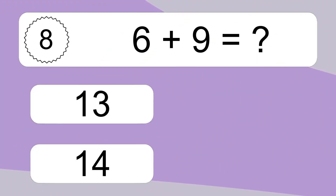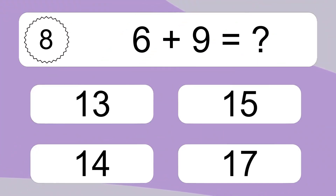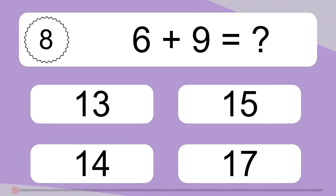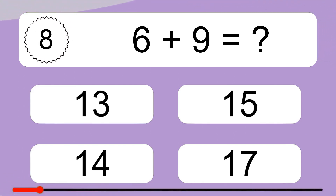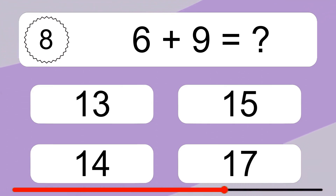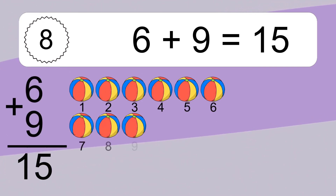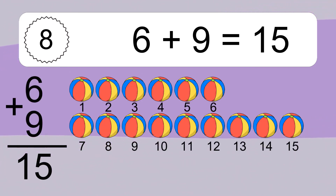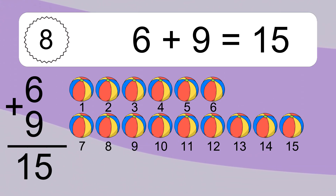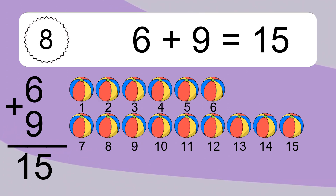Six plus nine equals what? Six plus nine equals fifteen. Let's count it: one, two, three, four, five, six, seven, eight, nine, ten, eleven, twelve, thirteen, fourteen, fifteen.